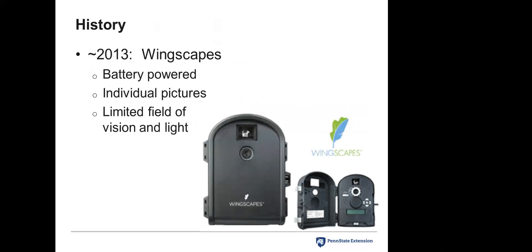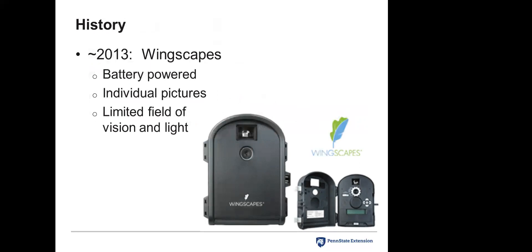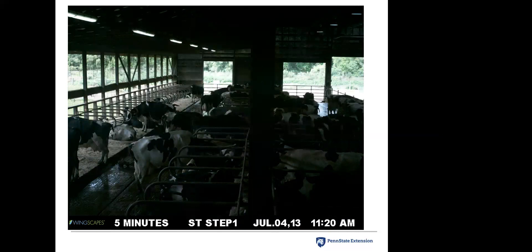A couple of years later we evolved into a product from Wingscape — originally a bird-watching camera that we adapted to cow-watching. It was powered by four or six AA batteries. Once again it took individual pictures, leaving you with thousands of photos depending how long you let it run. Its real downfall was it ate up batteries very quickly and had a limited field of view. The cameras really didn't have a very wide-angle lens, and even though barns were well lit, we still couldn't capture very good pictures — they were meant for outdoor use and didn't work well inside facilities. We got limited success with them and really struggled with the quality of photos.